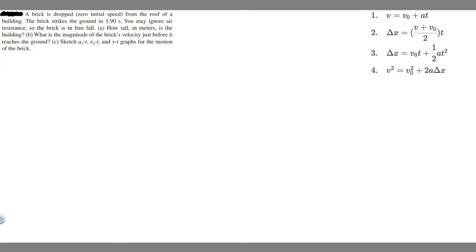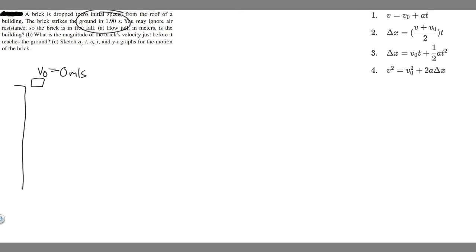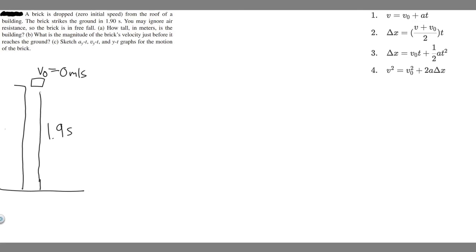Let's go ahead and draw what's going on here. We have this brick falling from the roof of a building. It's going to have zero initial speed, so the initial velocity v₀ is zero meters per second. It's going to fall all the way down and strike the ground in 1.9 seconds. We're trying to find how tall the building is — that's delta y — and also the velocity just before it hits the ground.